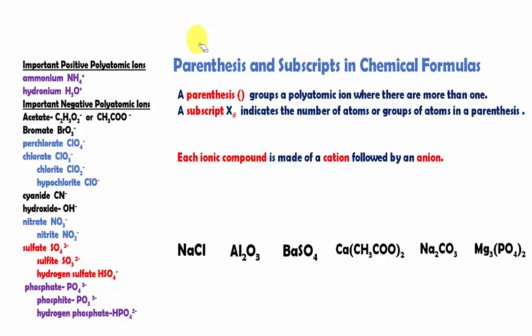In the last lesson, we learned about polytomic ions — how polytomic ions are basically a group of two or more atoms that bond together, but they function as a single ion with a specific charge. In this lesson, we're going to learn about how they are used in a chemical formula, and how that relates to parentheses and subscripts in chemical formulas.